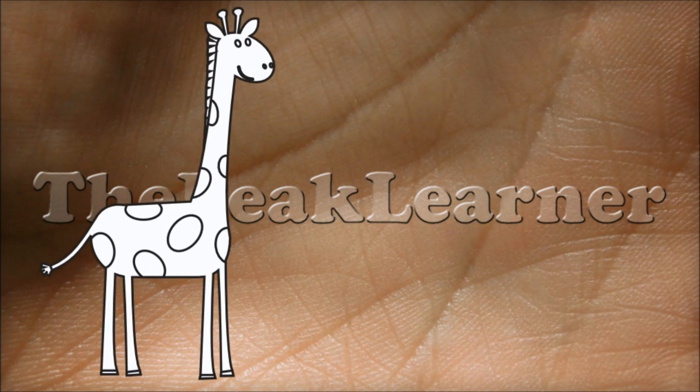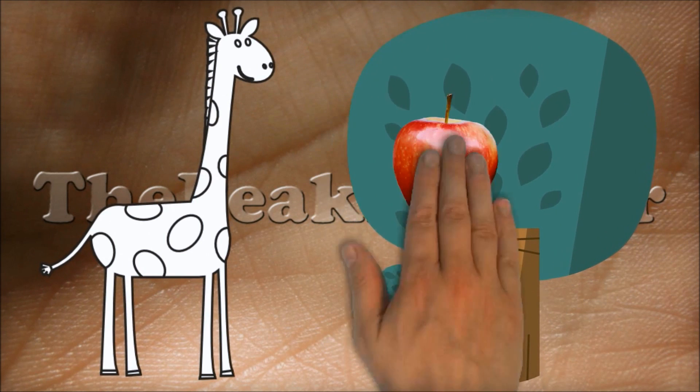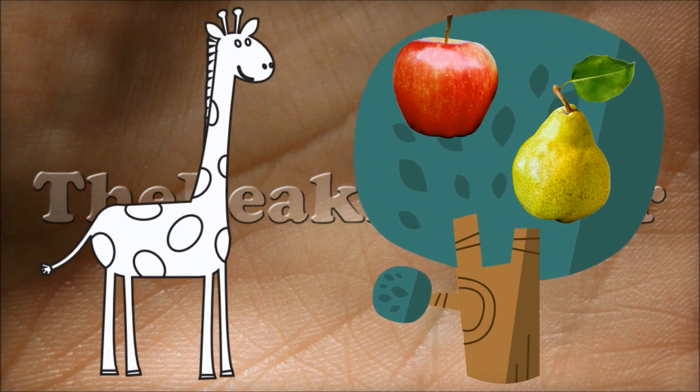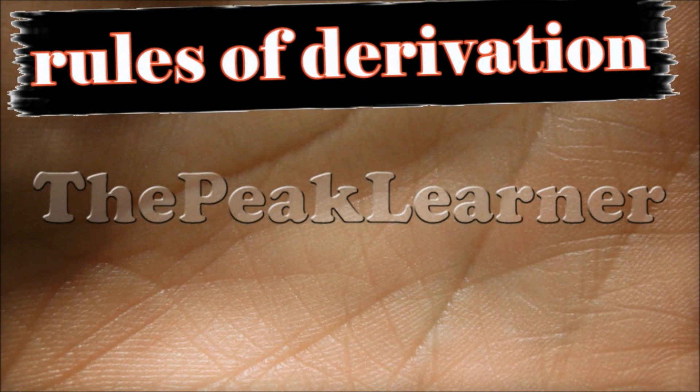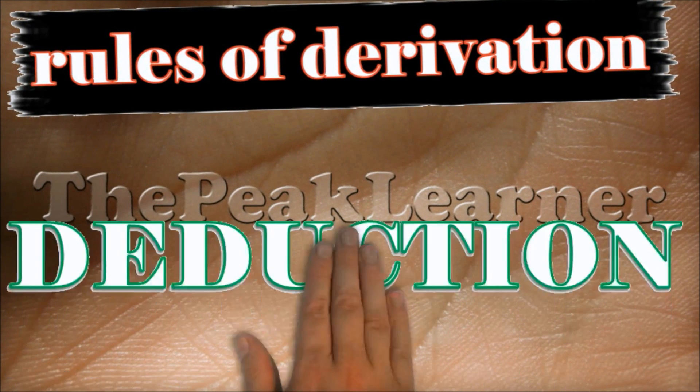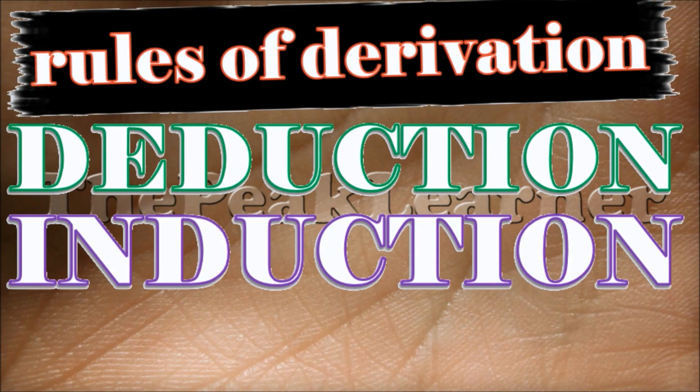Even animals make inferences such as the following: If apples are good to eat, pears are probably too. The three main types of inference are deduction, induction, and abduction.